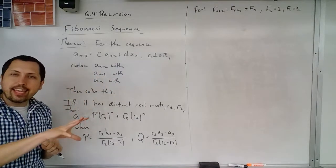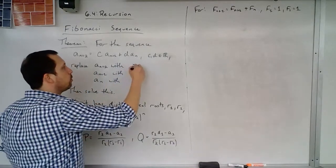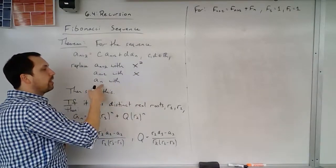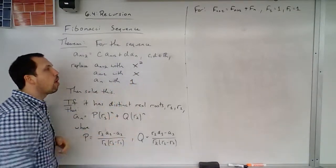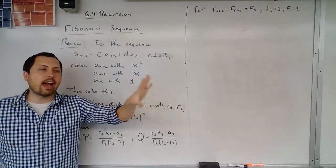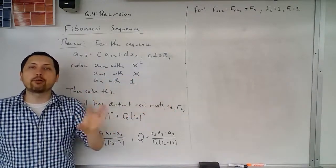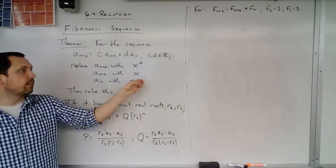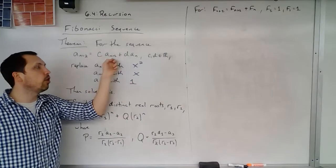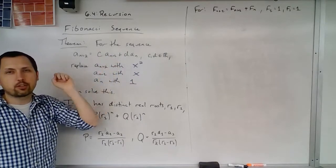I'm going to replace a sub n plus 2 with x squared, a sub n plus 1 with x, and a sub n with 1. So I'm basically representing how far away I get from a sub n with powers of x's. So this is the strategy that you use to find closed formulas of these types of recursive sequences.